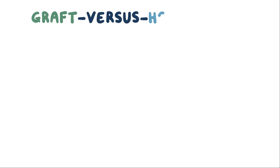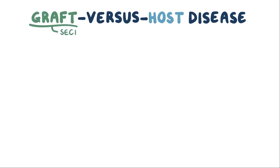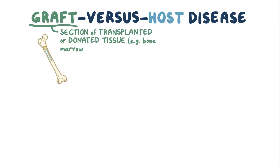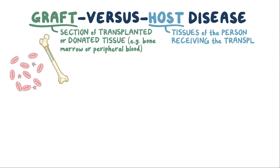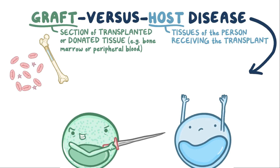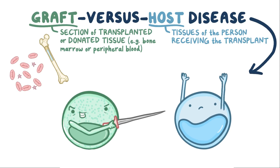With graft versus host disease, graft refers to a section of transplanted or donated tissue, and host refers to the tissues of the person receiving the transplant. In this disease, immune cells in the donated tissue attack the recipient's body cells.